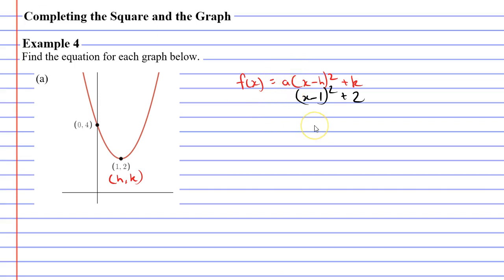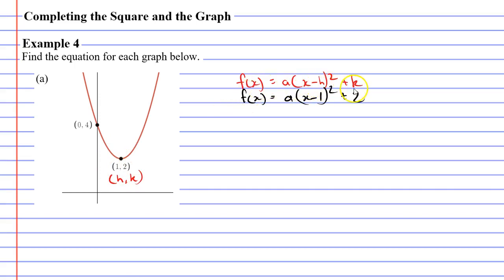We need to figure out what A is, so for now we'll leave it as A and all we need to do is figure out what A equals, and then we've got the function for our graph. So how do we find A? Well, they actually gave us two clues here. One of the clues, the vertex, allowed us to find the values of h and k. The other point that they gave us will help us find A.